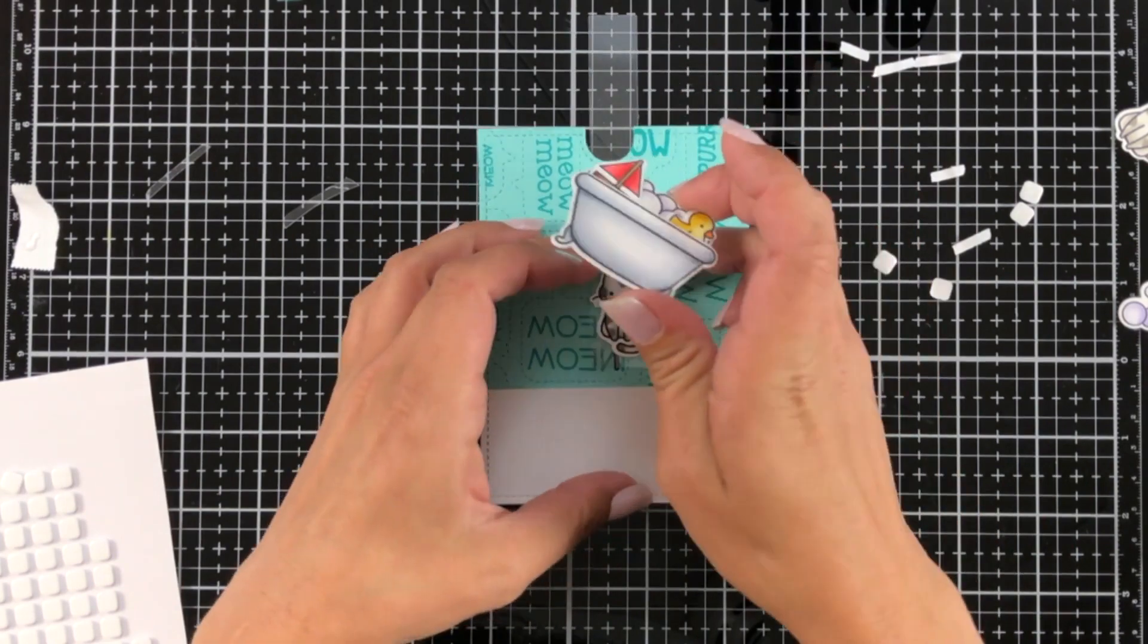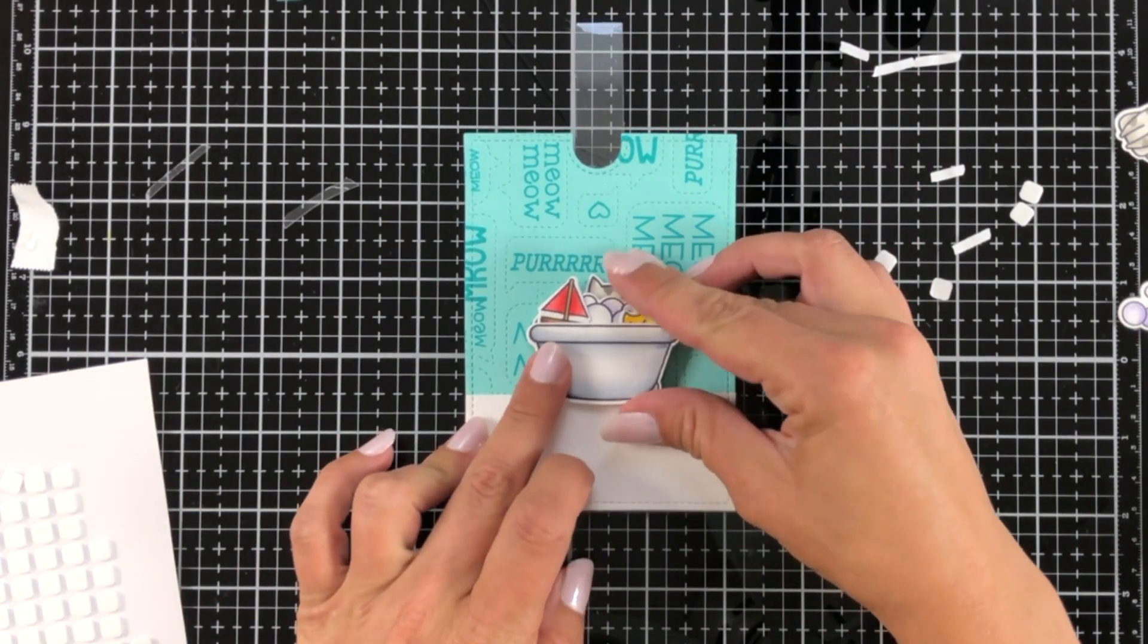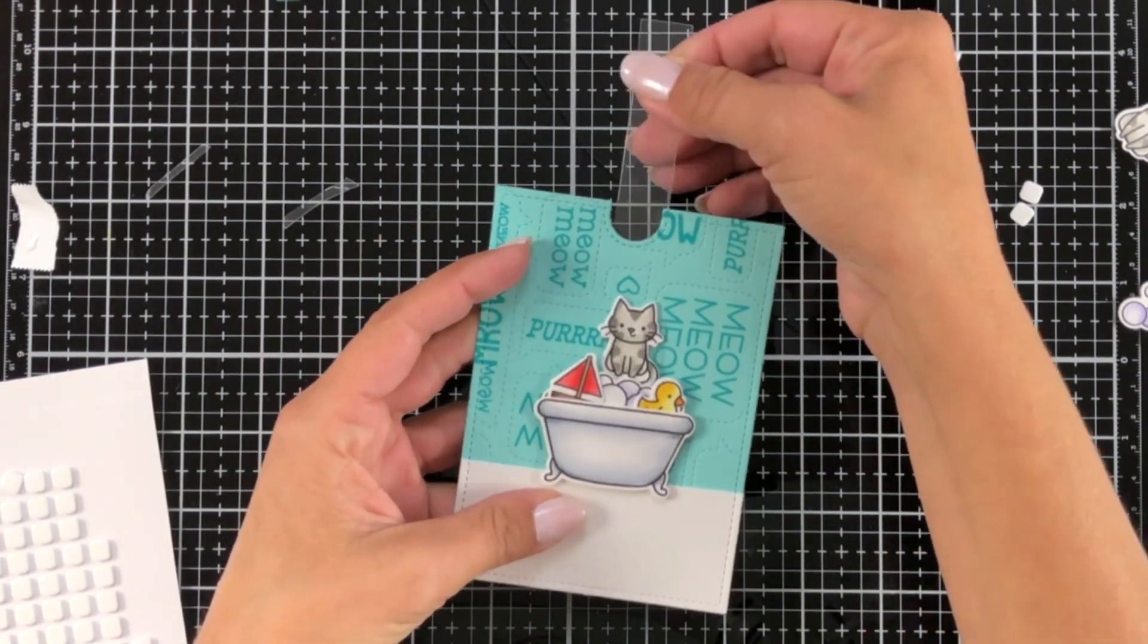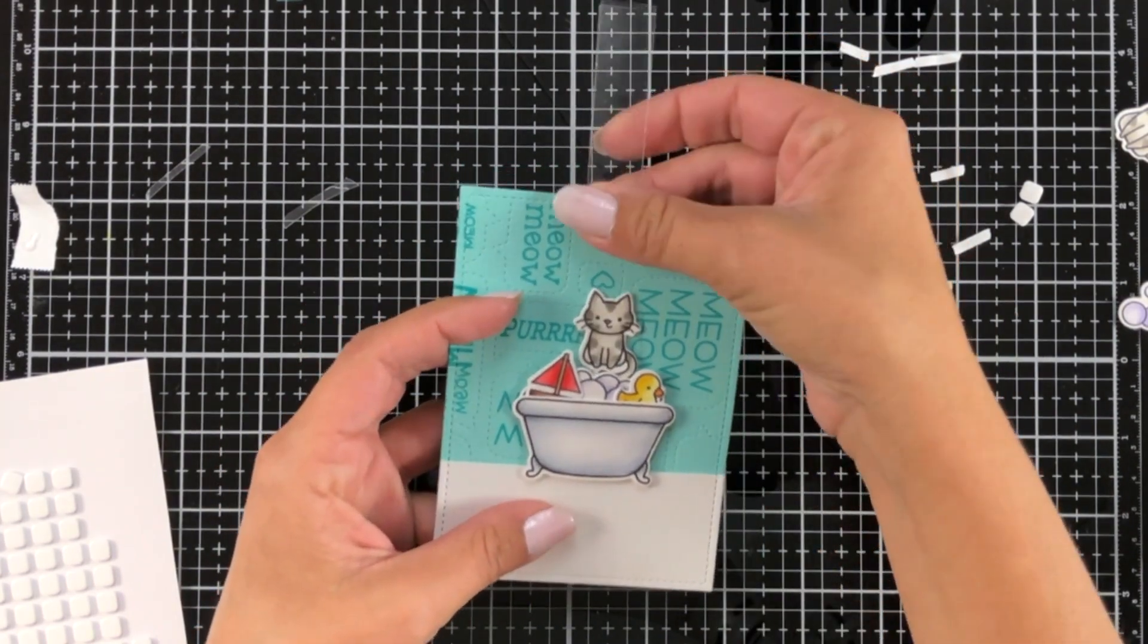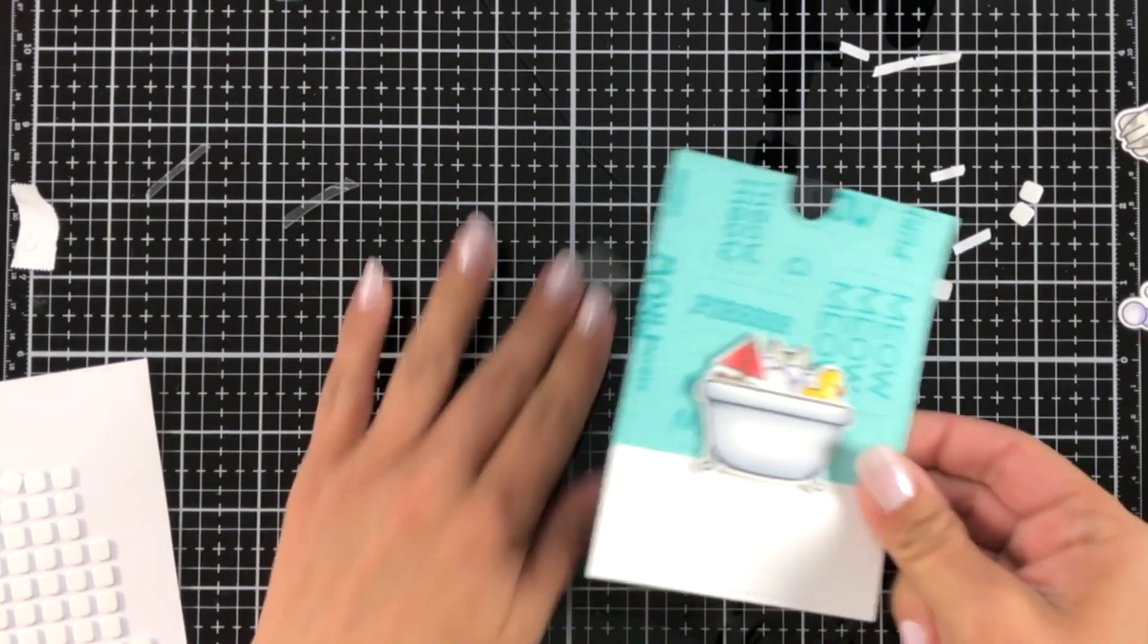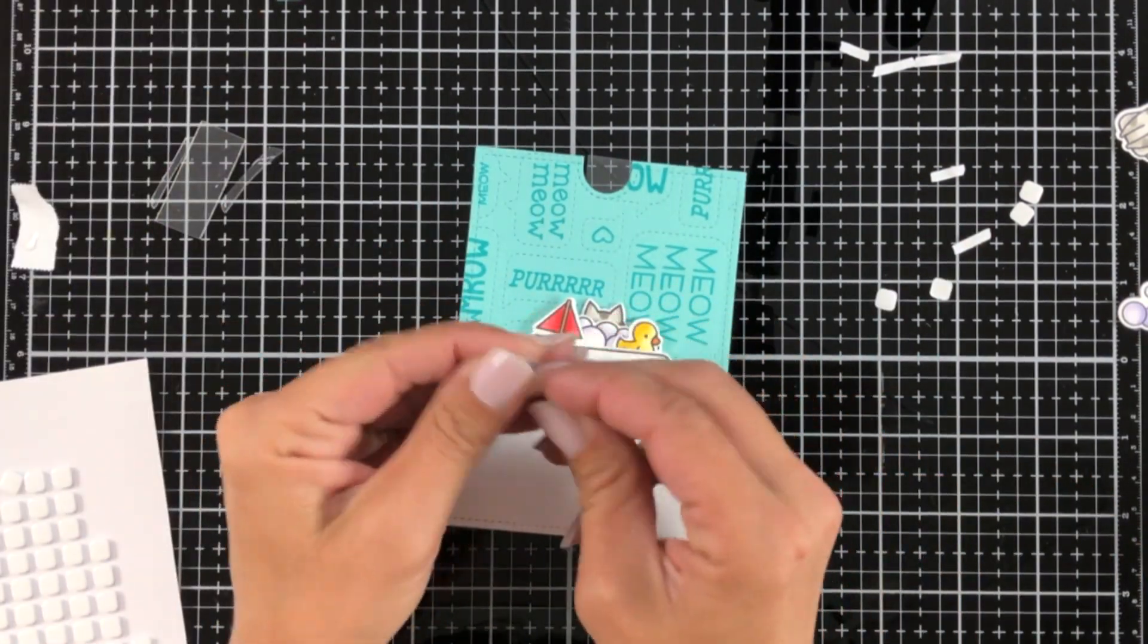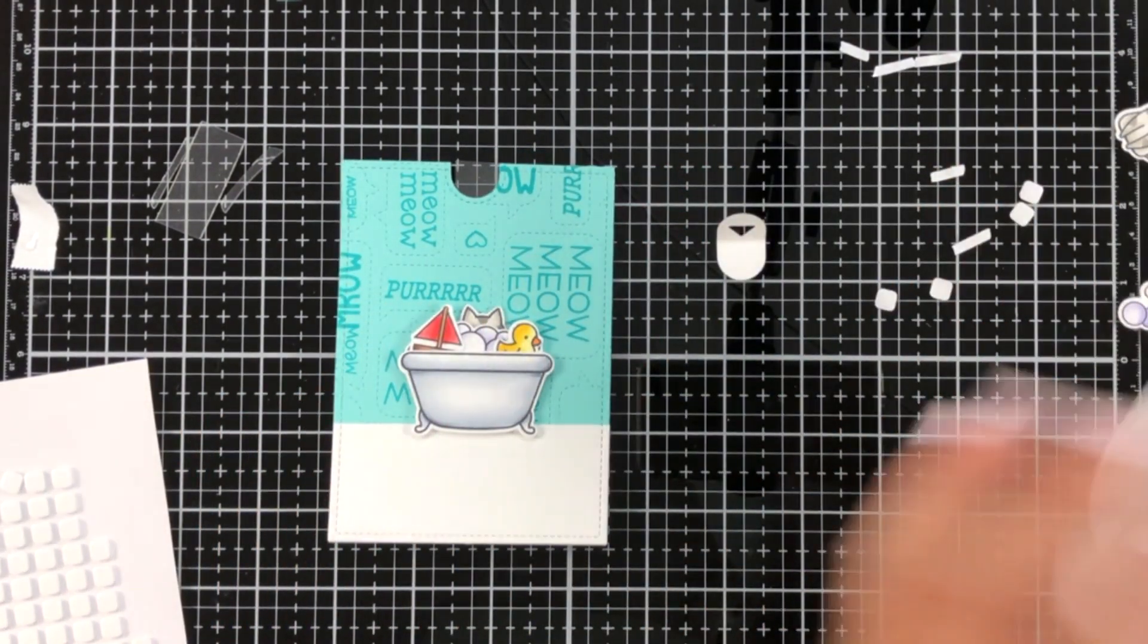Then I'm taking some small foam squares, adding those to the very edges of my bathtub, just lightly putting that in place over the kitty. Once I know I'm not catching on those foam squares, I can give that a harder push to make sure those foam squares are really stuck to the background. You just want to make sure whatever image you're putting over the top is giving you enough room for your slider piece to move up and down.